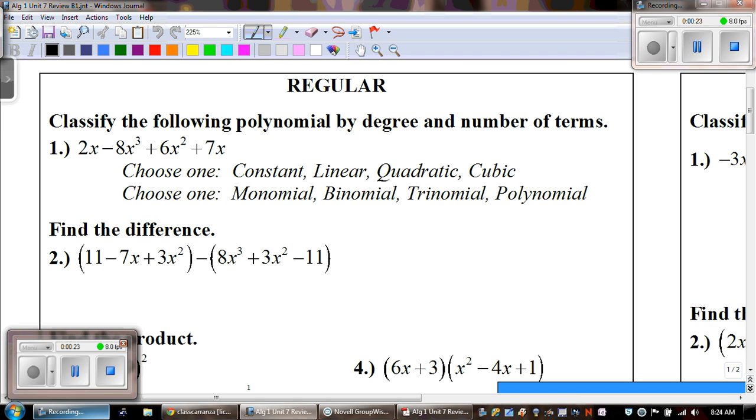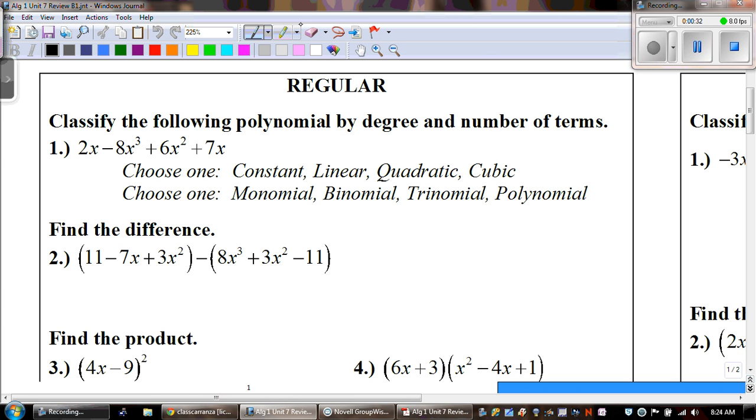First one says to classify the following polynomial by degree and number of terms. And I know right away, just by looking at that, that it's not written in standard form. So I'm going to go ahead and rewrite this and see if I can combine any like terms. First, negative 8x cubed.